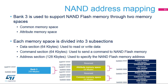Bank 3 is used to interface with the NAND flash memory. It is divided into two memory spaces: common memory space and attribute memory space. The common memory space is for all NAND flash read and write accesses, except when writing the last address byte to the NAND flash device, where the CPU must write to the attribute memory space. Each memory space is subdivided into three sections: a data section (64 kilobytes) used to read or write data, a command section (64 kilobytes) used to send a command, and an address section (128 kilobytes) used to specify the NAND flash memory address.